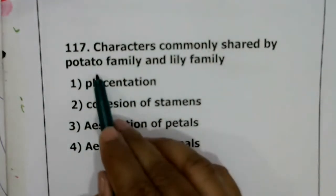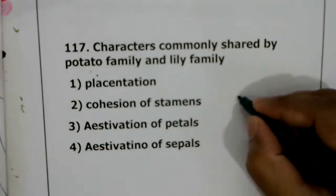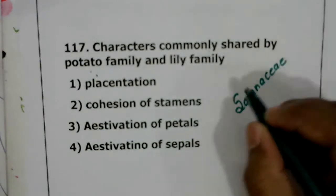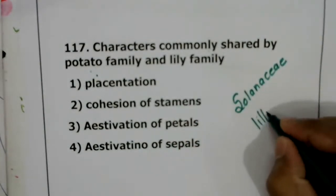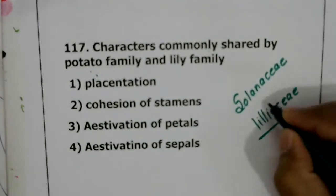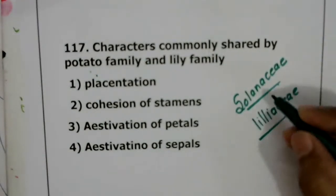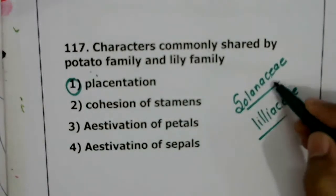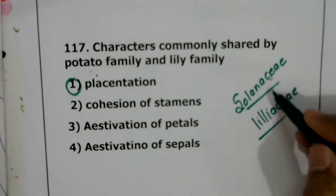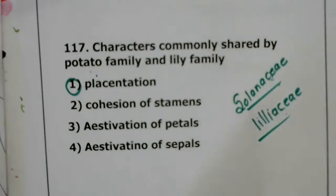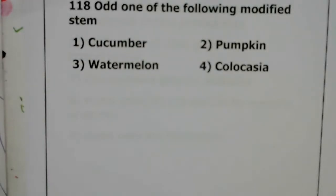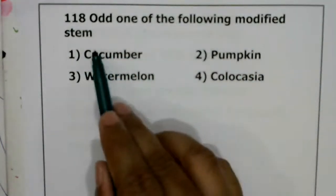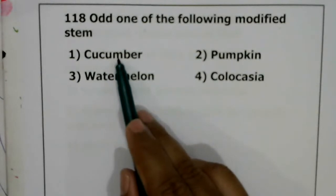Question 117: characters commonly shared by potato family (Solanaceae) and lily family (Liliaceae). In both families, placentation is axile type. So the common character is axile placentation. Correct answer for question 117 is axile placentation.